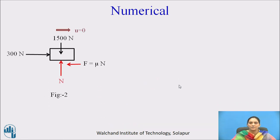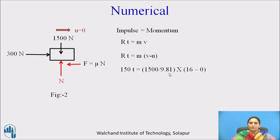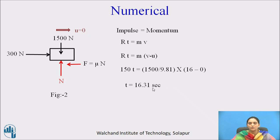Applying the impulse-momentum method: impulse equals change in momentum, so R·t = M·V_final − M·V_initial. Here R = 150 N, t is unknown, M = 1500/9.81 kg, final velocity = 16 m/s, and initial velocity = 0. Solving for t, we get t = 16.31 seconds. So to gain a velocity of 16 m/s, the block needs a time of 16.31 seconds.